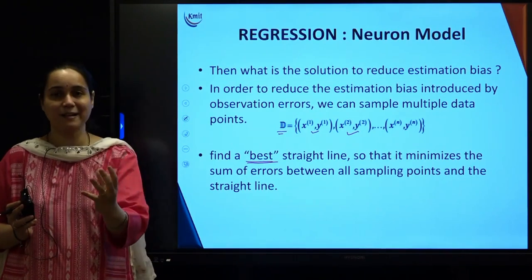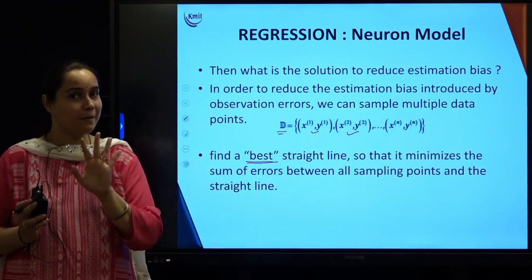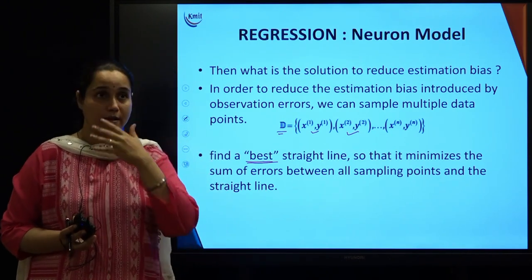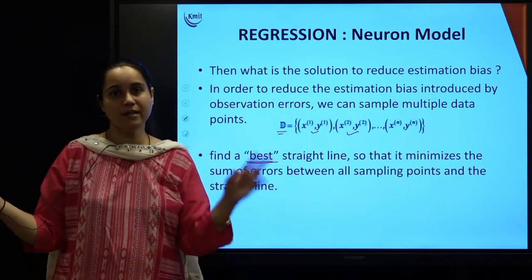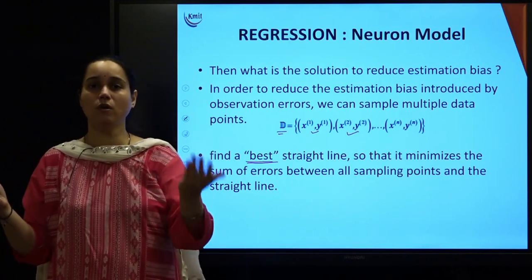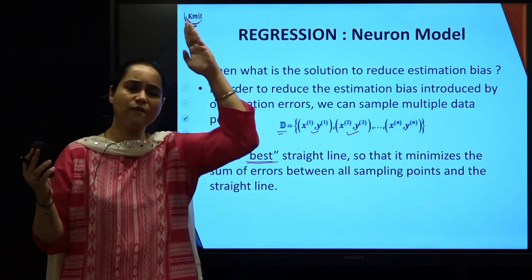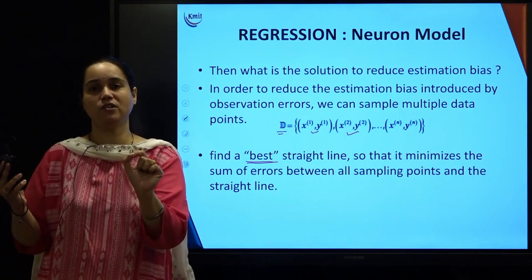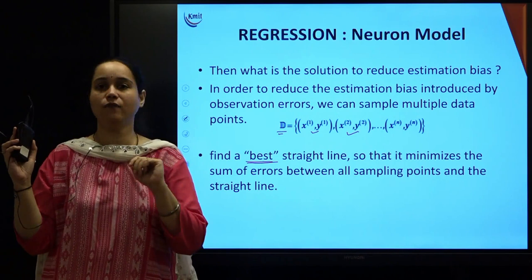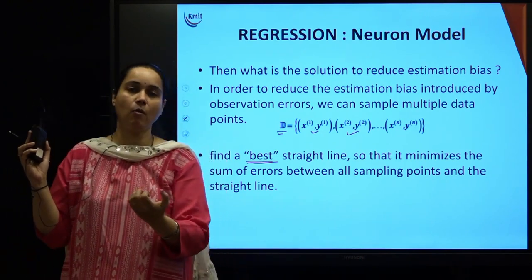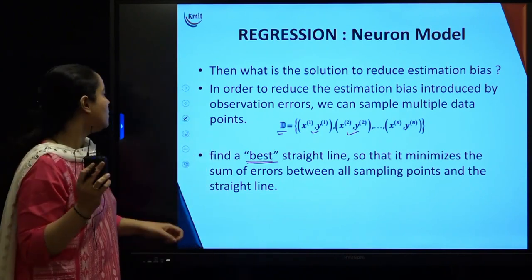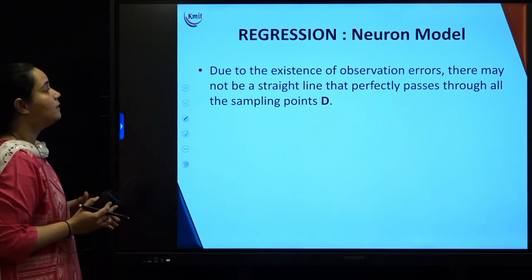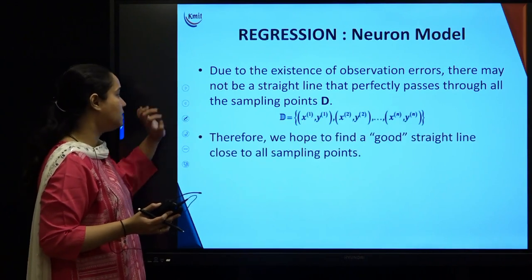The aim is now clear: earlier we were taking only two points and concluding with weight and bias, but practically there will be observational errors. To get the best line, we must accommodate many more points. With more points there will be several lines passing through them — which line to choose? Choose only that line which gives the minimum observational error. That is how the fundamental of best fit curve came into picture: it is the line which gives the least error.